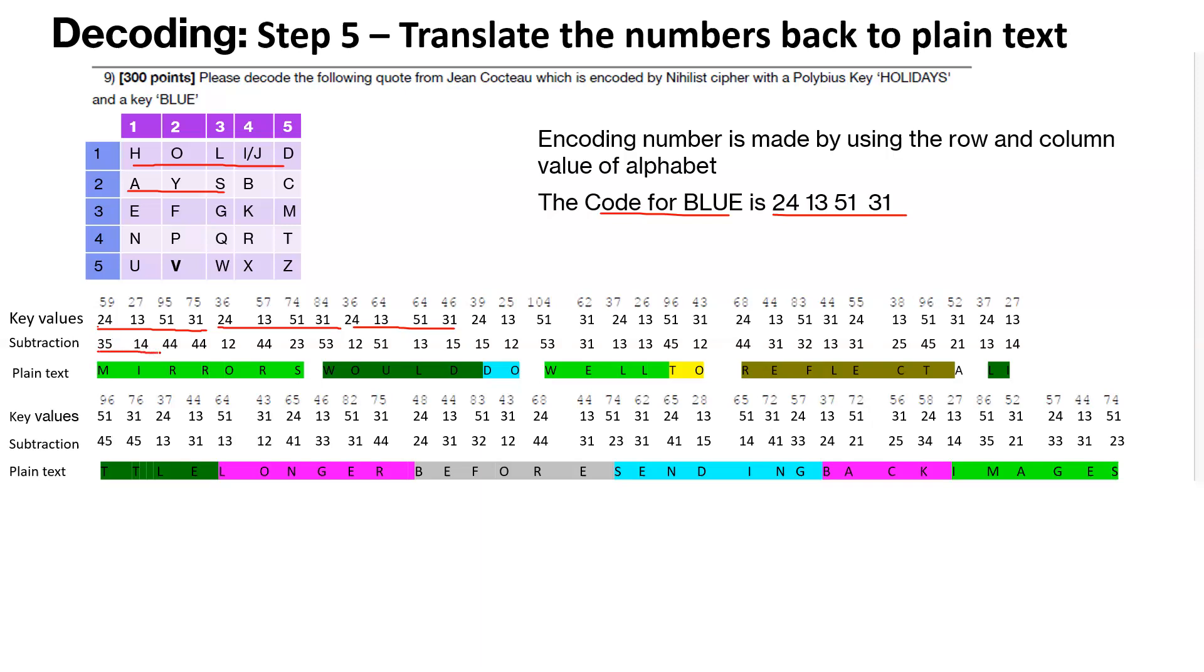And once we got those numeric values here, we went back to our grid, five by five grid, and translated the numeric value back to the plain text, which revealed the overall plain text for the code for us.